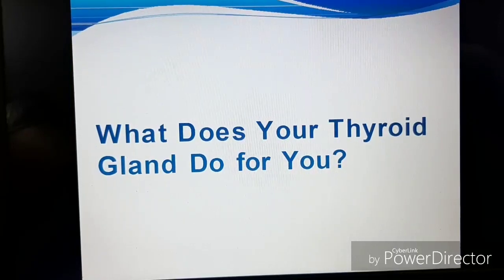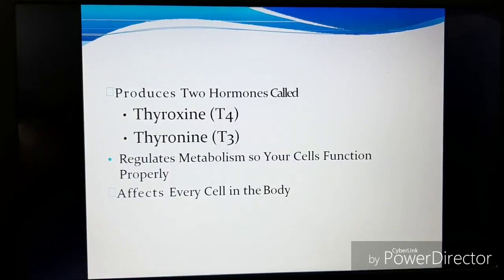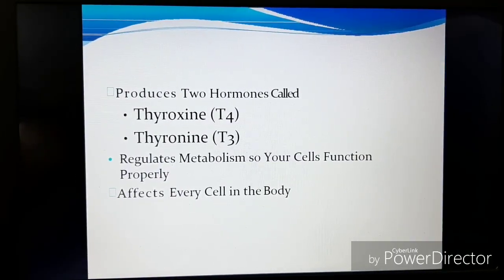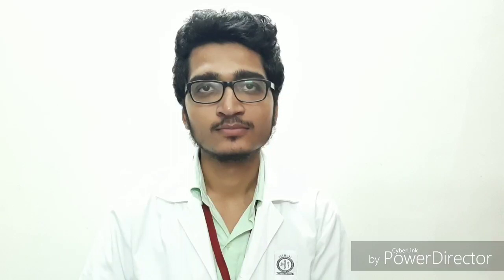So, what does your thyroid gland do for you? Basically, it produces two hormones: thyroxine and triiodothyronine, also known as T3 and T4. What they basically do is regulate the metabolic function of your whole body. Now that we know about the basic functions of the thyroid gland, let us come to goiter.